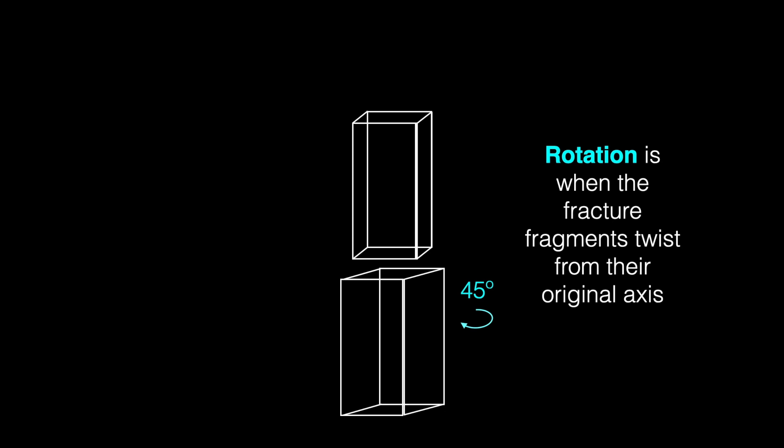This concludes part one of this video. In the next video in this series, we're going to discuss fractures involving the growth plate using the Salter-Harris classification system. Before we leave, we wanted to leave you with a few key take-home points. 1. Fractures can be classified as either complete or incomplete. 2. Incomplete fractures include bowing, buckle, and greenstick fractures and are unique to pediatrics. 3. The location of fracture fragments can be described by the terms displacement, shortening, impaction, distraction, angulation, and rotation.